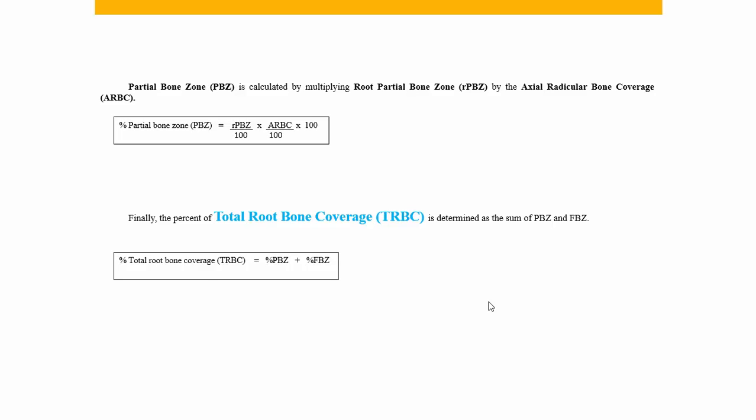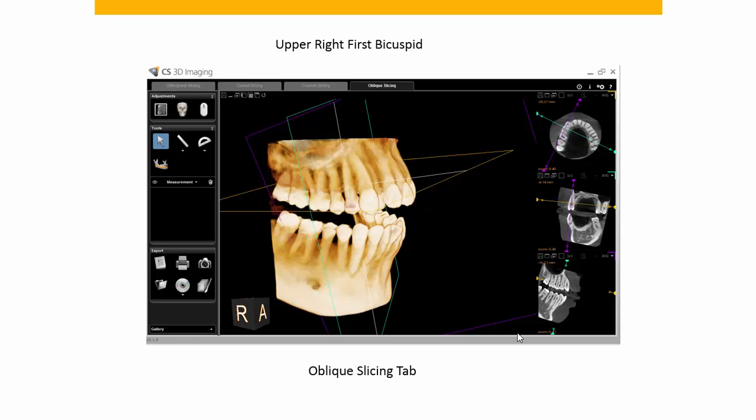This method tells you whether the root has bone coverage as seen on cone beam CT. It doesn't take into account thickness, and it assumes the root is a round circle of 360 degrees — which we know isn't the case — but in terms of a method it gives you a relative root bone coverage for individual teeth. For example, if you're trying to make a strategic extraction decision, you can use this method to compare several teeth within the same mouth.